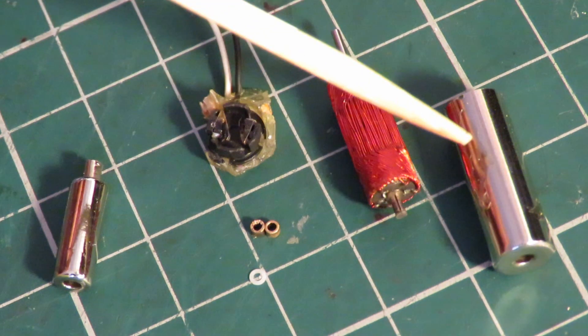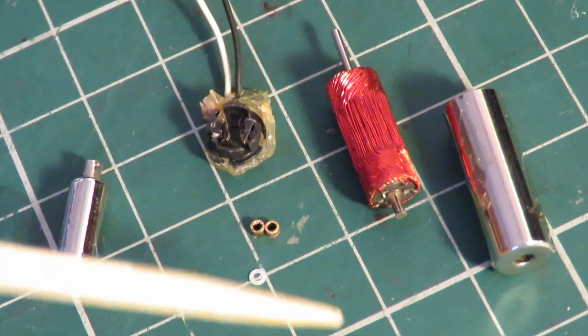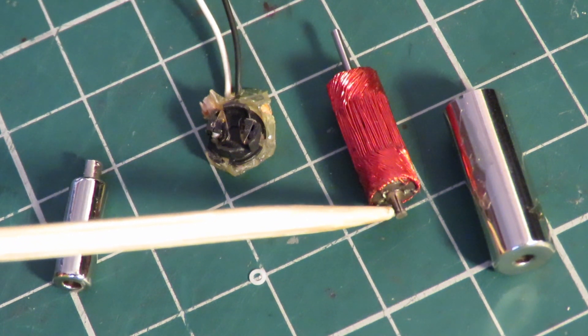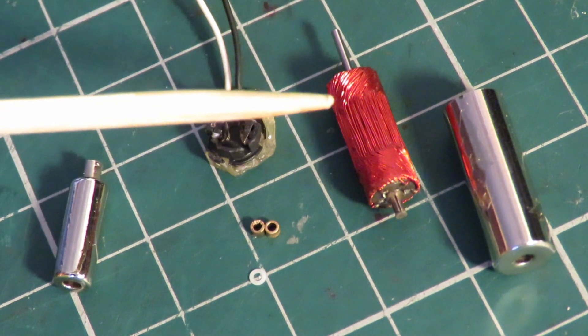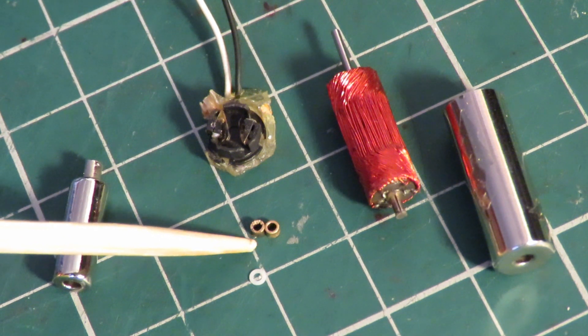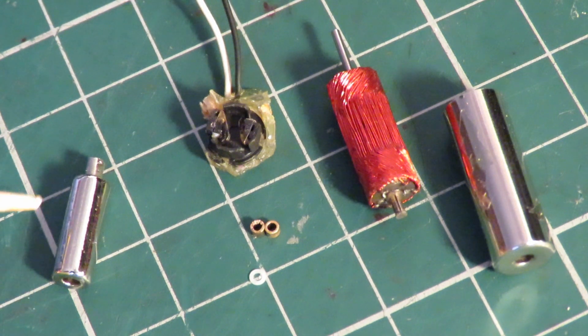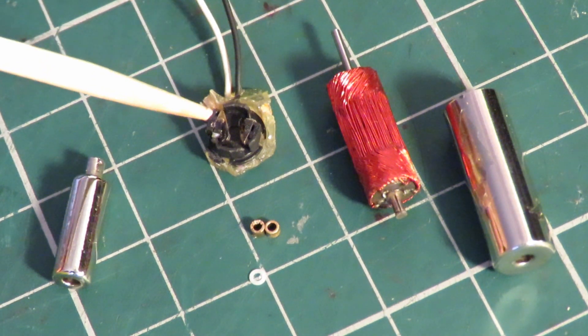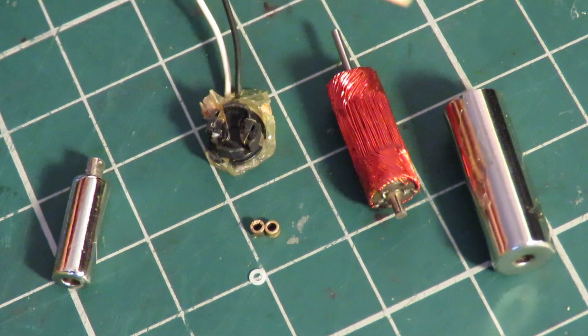So that's the metal case. That's the coreless armature with the commutator on the end of it, connecting all the individual coils. Then we've got little brass bearings that were in the end of the magnet for the shaft to go through. And then that's the brushes in the plastic plug that goes in that end.